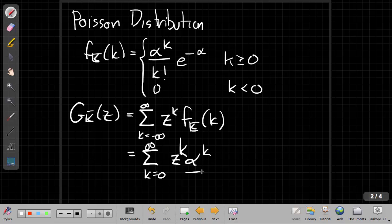So I have alpha to the k over k factorial e to the minus alpha. So that's my generating function.